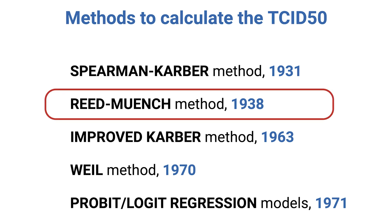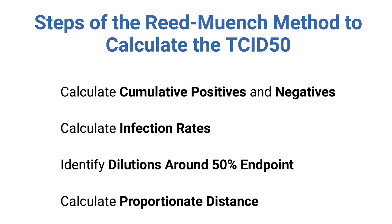In today's session, we'll focus on the Reed-Muench method. If you haven't seen our video on the TCID50, go and check this first, as it will be much easier to follow this video. This method involves calculating the cumulative positive and negative infection counts at each dilution level. Using these cumulative values, we then calculate the infection rates to identify the dilutions that bracket the 50% infection endpoint. With this information, we calculate the proportionate distance, which allows us to accurately interpolate the dilution at which 50% of the wells show infection, ultimately determining the TCID50.